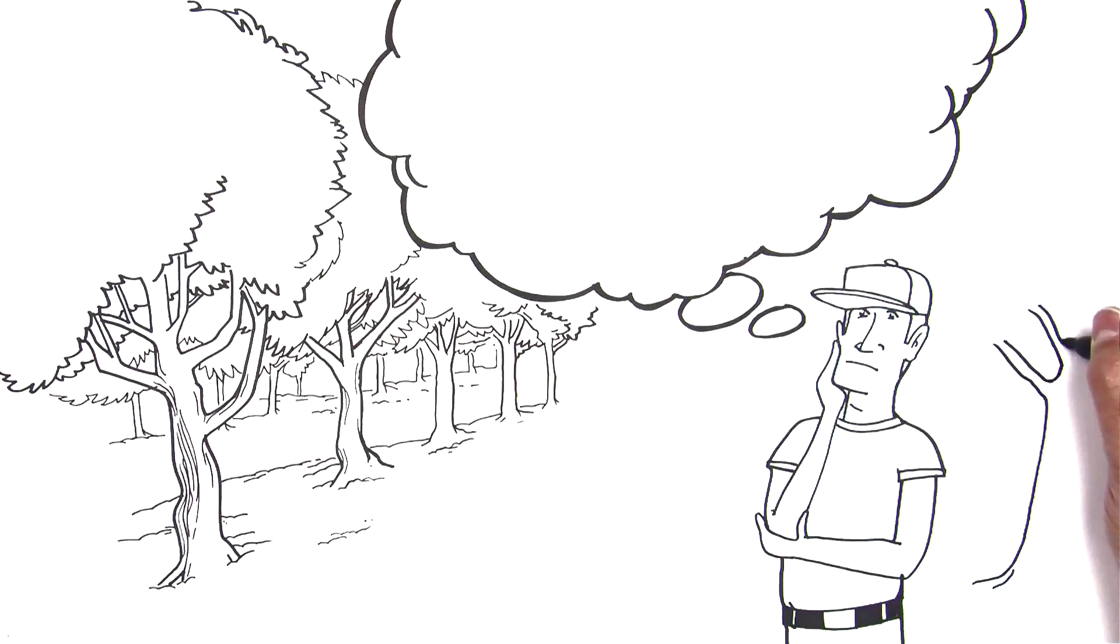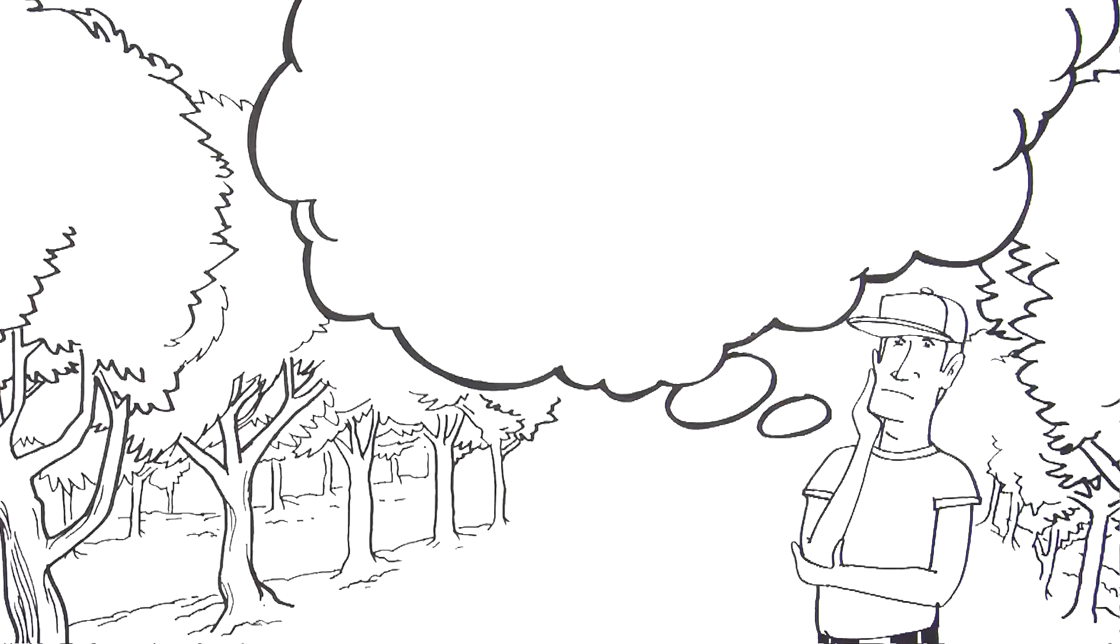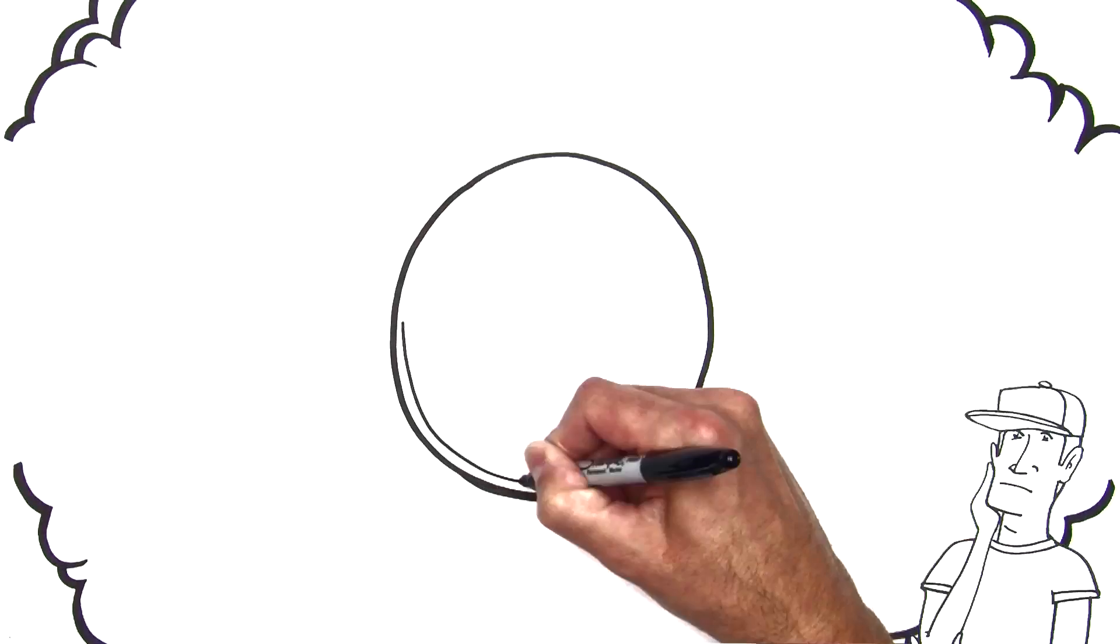What if you could design the perfect drip line emitter for your orchard? It might look something like this.